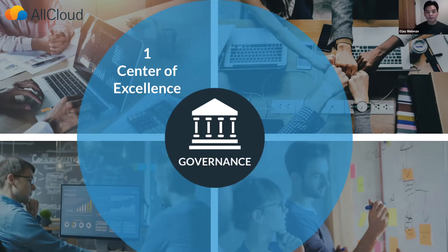There are four key areas of focus that I'd like to cover to help establish a formal governance model. The first is defining a center of excellence, or a COE. A COE starts with assembling a steering committee, where an executive sponsor and key stakeholders can meet regularly to set the standards for growing the business using Salesforce and how it impacts their respective department.